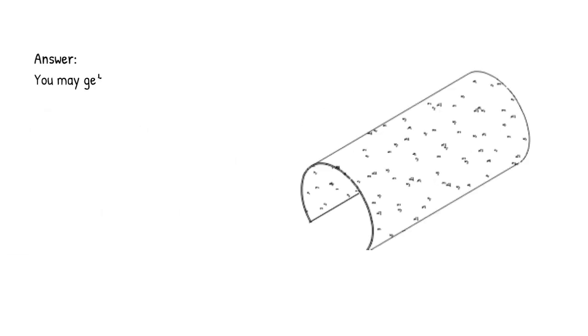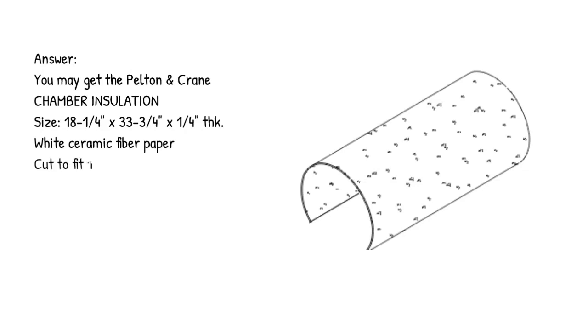Answer: you may get the Pelton and Crane Chamber Insulation. Size: 18 1/4 inches by 33 3/4 inches by 1/4 inch thick, white ceramic fiber paper cut to fit 10 inch and 11 inch diameter chambers.